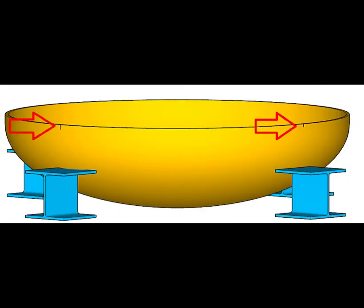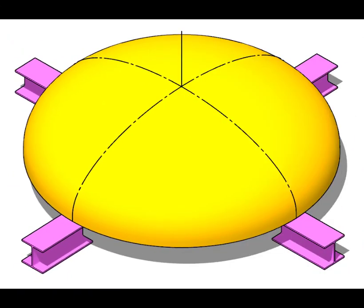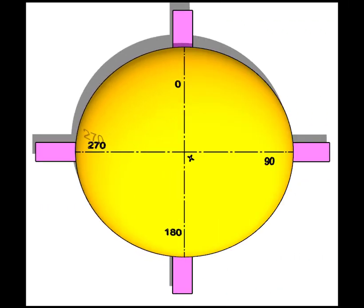Divide the circumference of the dish end into minimum four equal parts. Now put the dish end upside down and level. Draw lines through the center, connecting the previously marked points. Mark the 0, 90, 180 and 270 degrees.